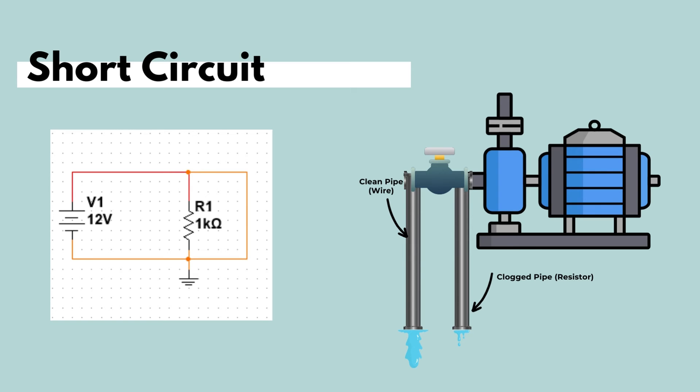So where do you think the water in this case would flow through? Of course it's going to flow through the path of least resistance. And in our case it's the wire or the pipe that has been connected by accident and has the least amount of resistance or least amount of debris or it's the least clogged out of the pipes. So in this case it will flow through the wire or the clean pipe.